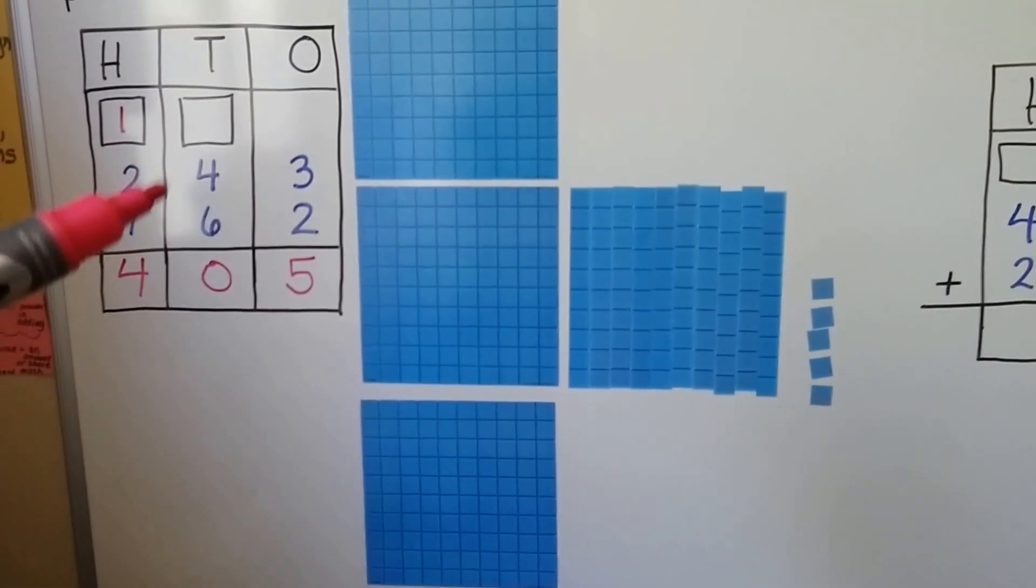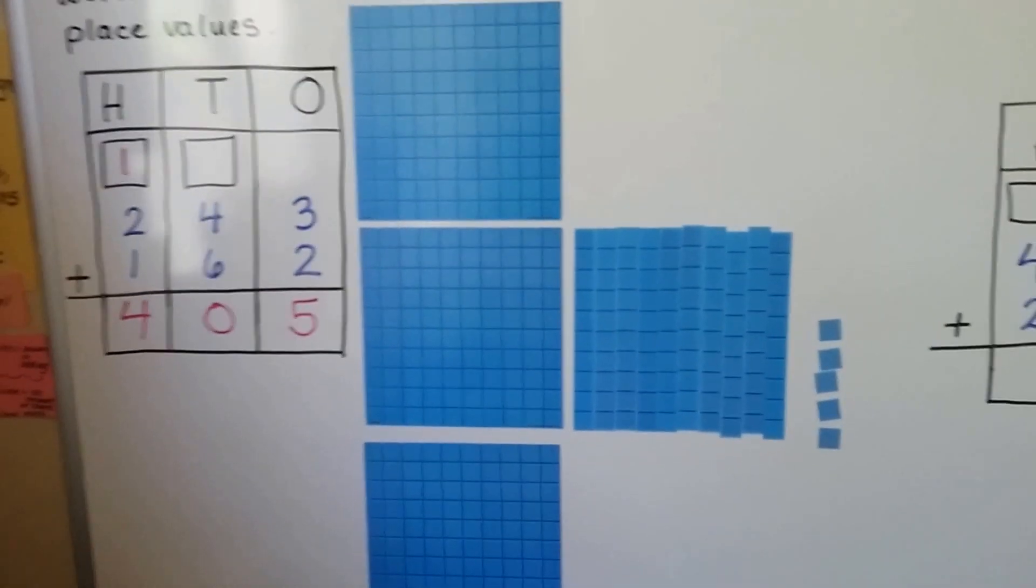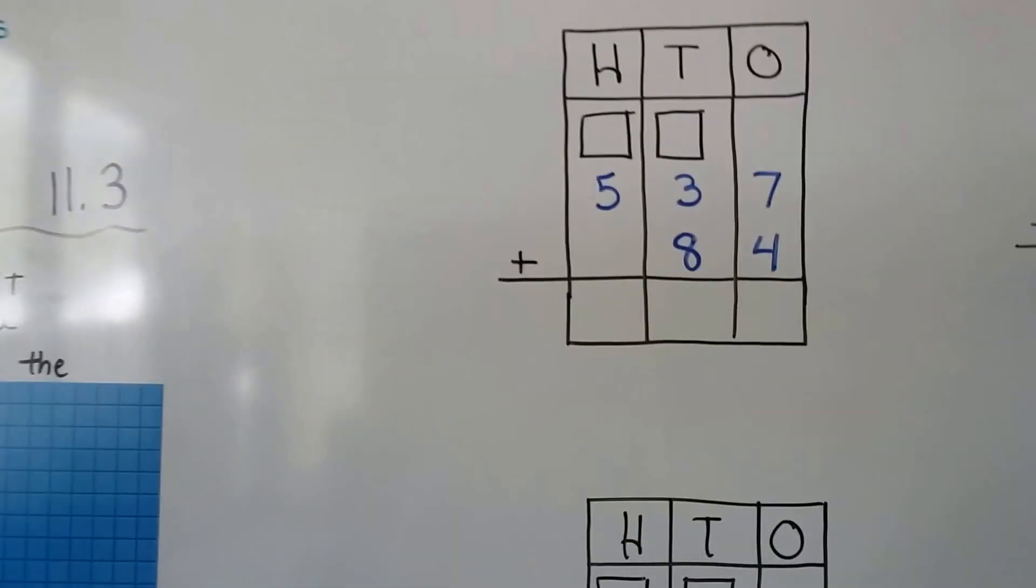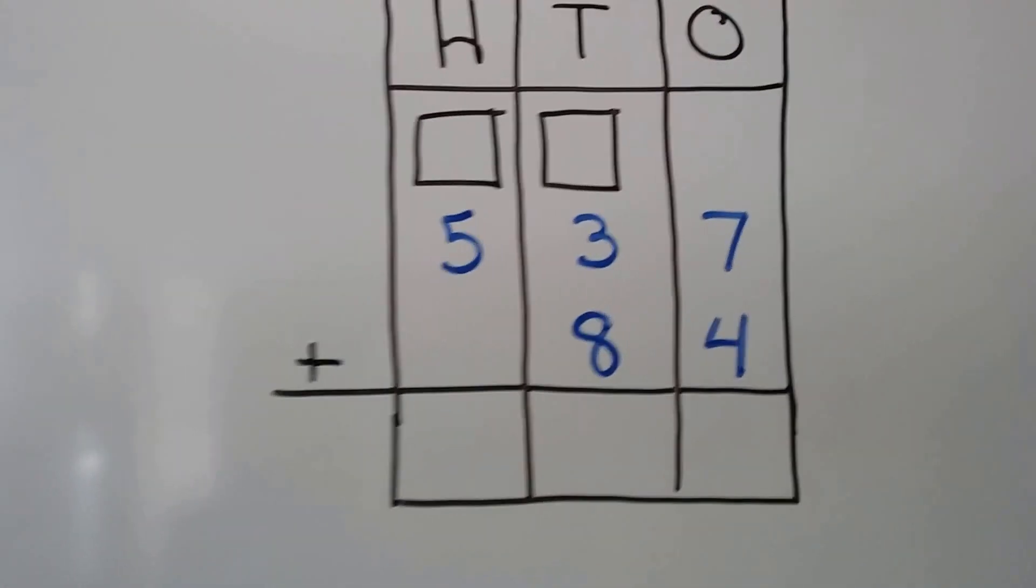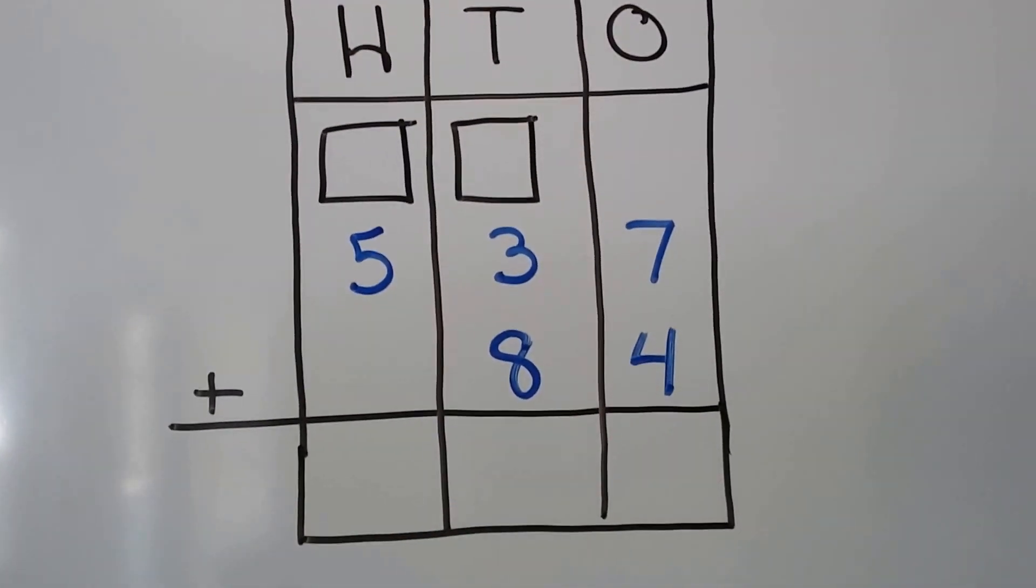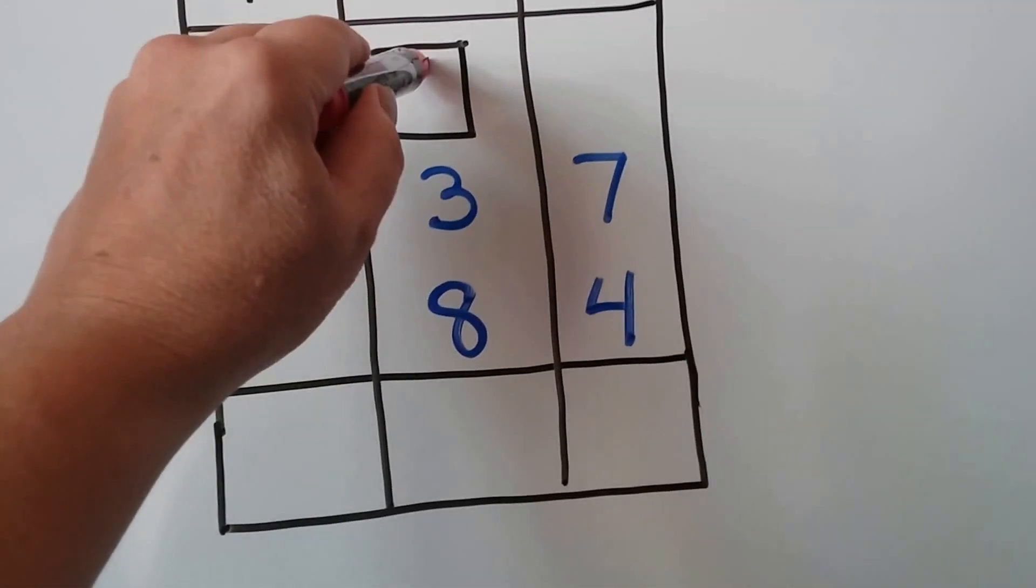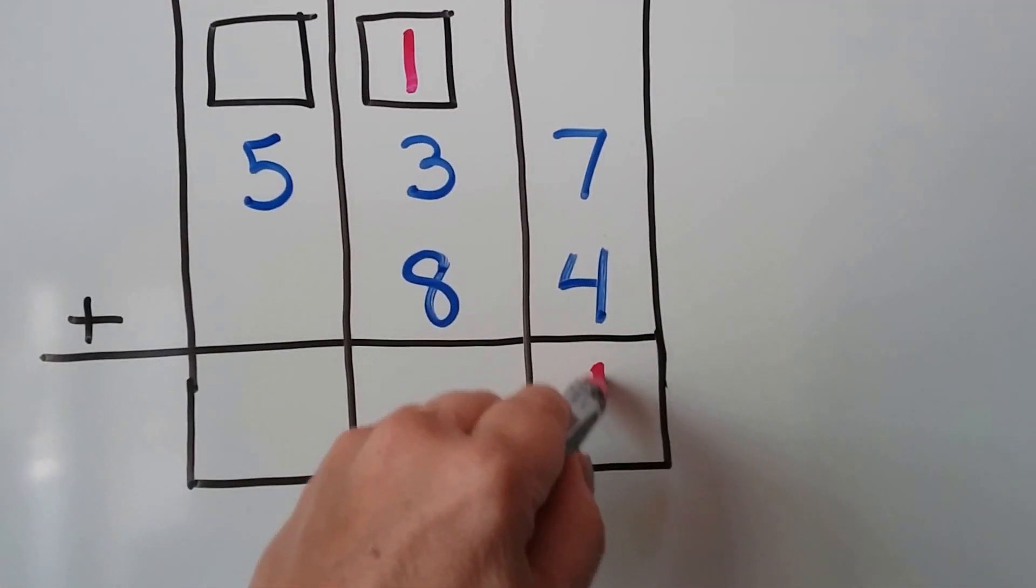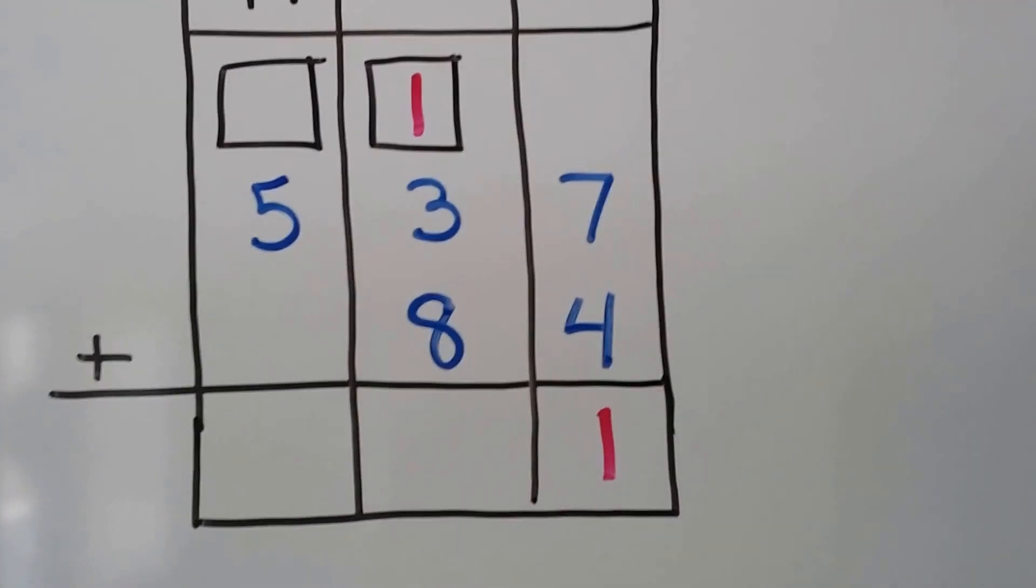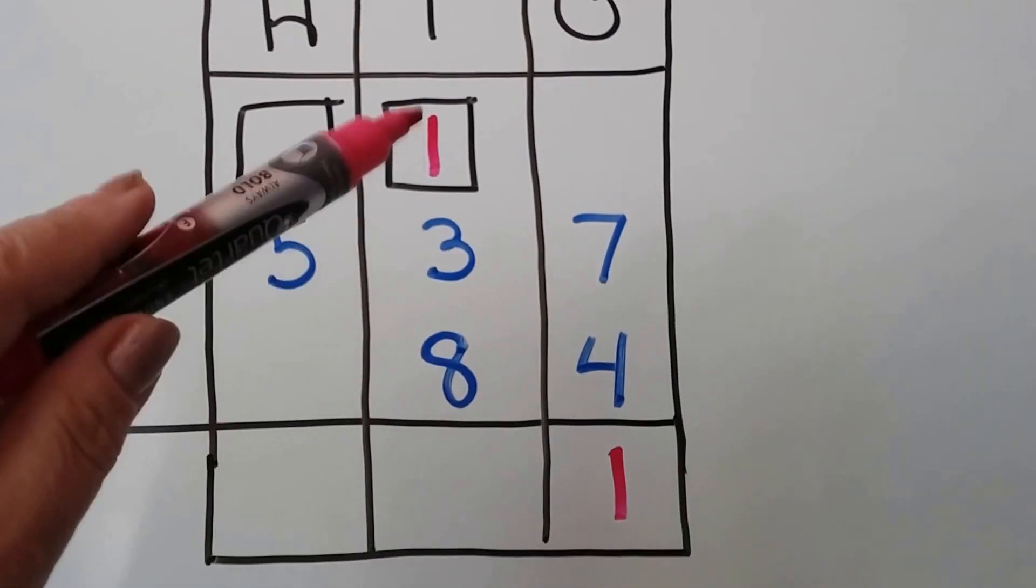So we're going to be using this work mat to add three-digit numbers. We can add three-digit numbers to two-digit numbers. Seven plus four is eight, nine, ten, eleven. We regroup the one and put the other one down here because we can't put two digits in one column, can we?